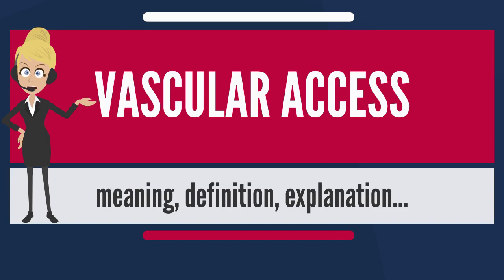The creation of all three major types of vascular accesses requires surgery. Catheter access, sometimes called a CVC — central venous catheter — consists of a plastic catheter with two lumens, or occasionally two separate catheters, which is inserted into a large vein, usually the vena cava, via the internal jugular vein or the femoral vein.